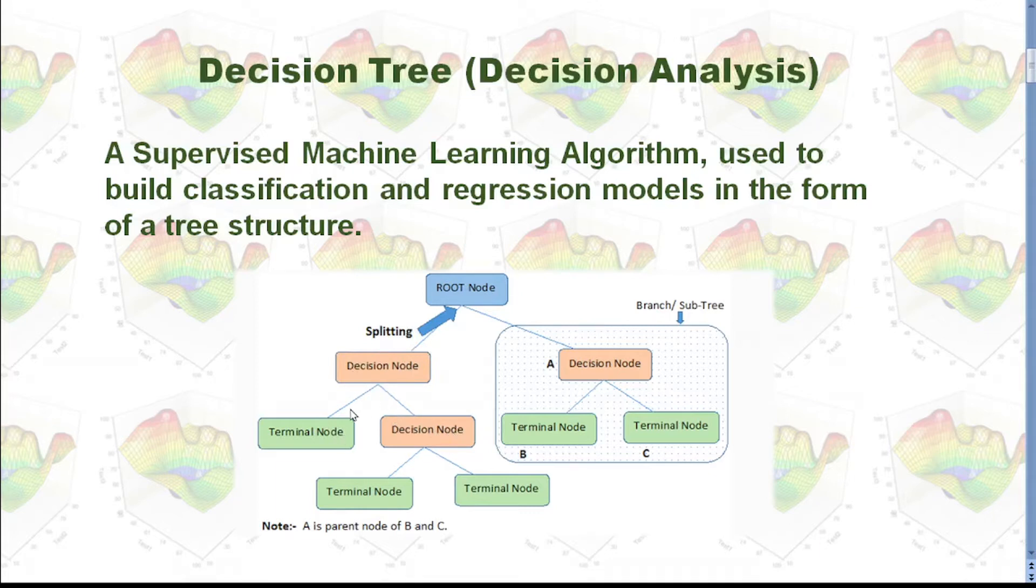Eventually, we don't want to split the data points anymore based on our predetermined criteria or the features of the data points. And this last node is called terminal node. And the node between root node and the terminal node is called decision node. Then we have this question: based on what feature should we split all those data points?